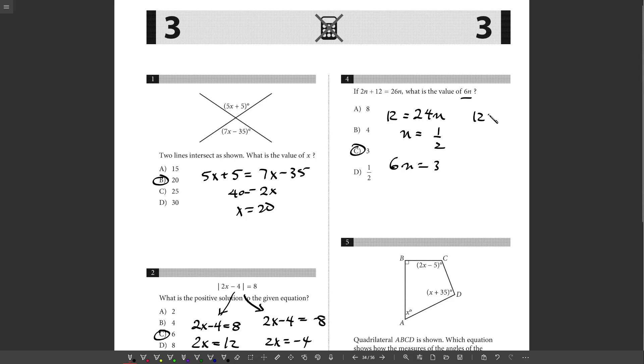Alternatively, once we had 12 equals 24n, instead of dividing both sides by 24, I could have just divided both sides by 4, and that essentially solves for 6n directly. But either way, just make sure you give them what they want, choice C.